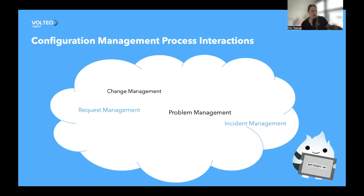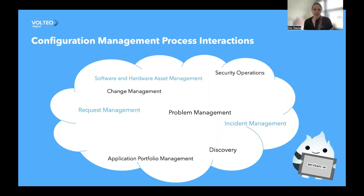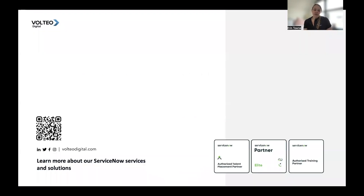As you can probably imagine, configuration management touches many processes within the platform. This slide shows only some of them, but configuration management really can touch any process in the platform that potentially needs to understand a relationship to another CI. Today we've reviewed the objectives and scope of configuration management, what you can accomplish by executing the process, what roles are required, and what processes interact with it. Don't forget to subscribe to our channel and hit the notification bell to stay updated on the latest ServiceNow best practices and tips. Let us know in the comments what topics you'd like us to cover next.